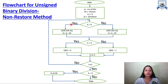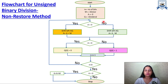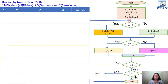Now this is the flowchart for binary division using the non-restoring method. The instructions are already given — this is the initialization step and later on we follow these steps. I am color-coding it to help you understand which step in the table belongs to which block in the flowchart. We will solve the question 11 divided by 3, where the quotient is 3 and the remainder is 2.